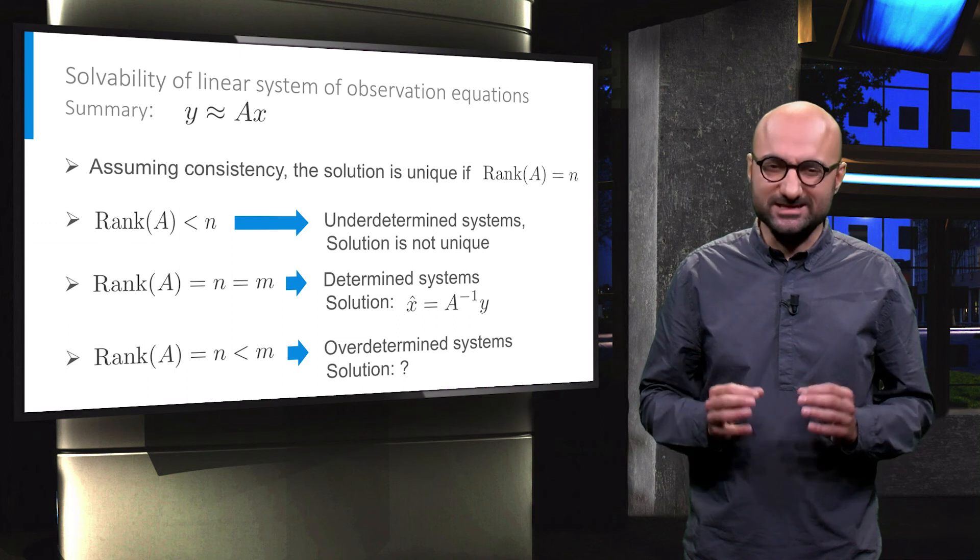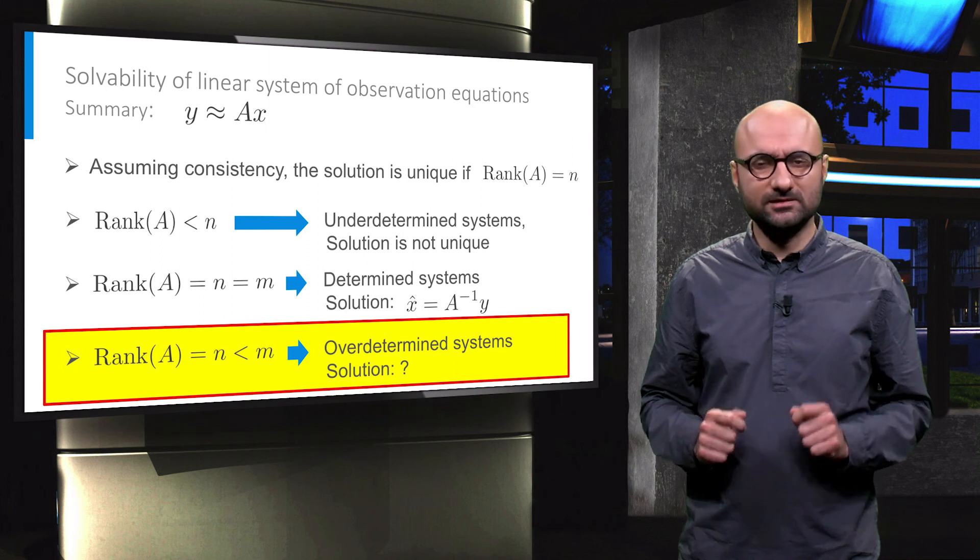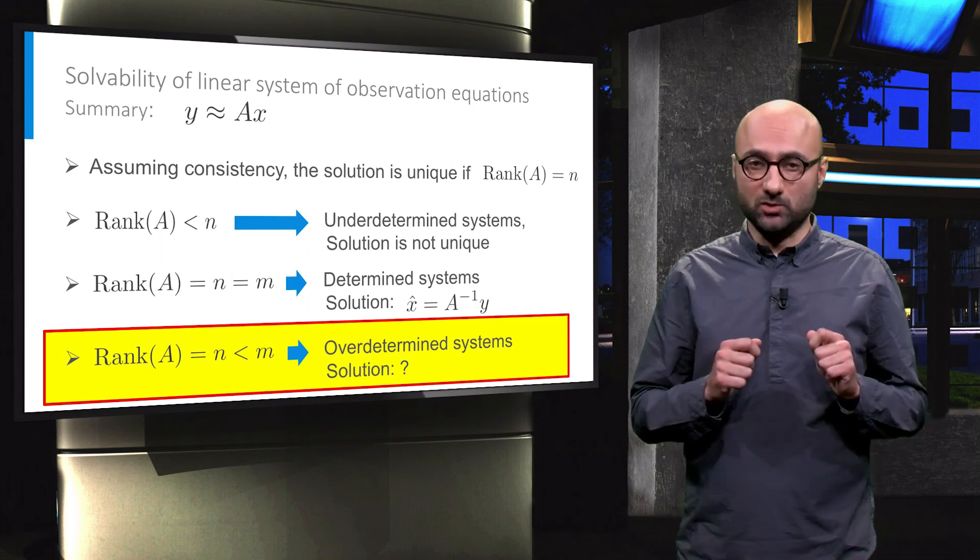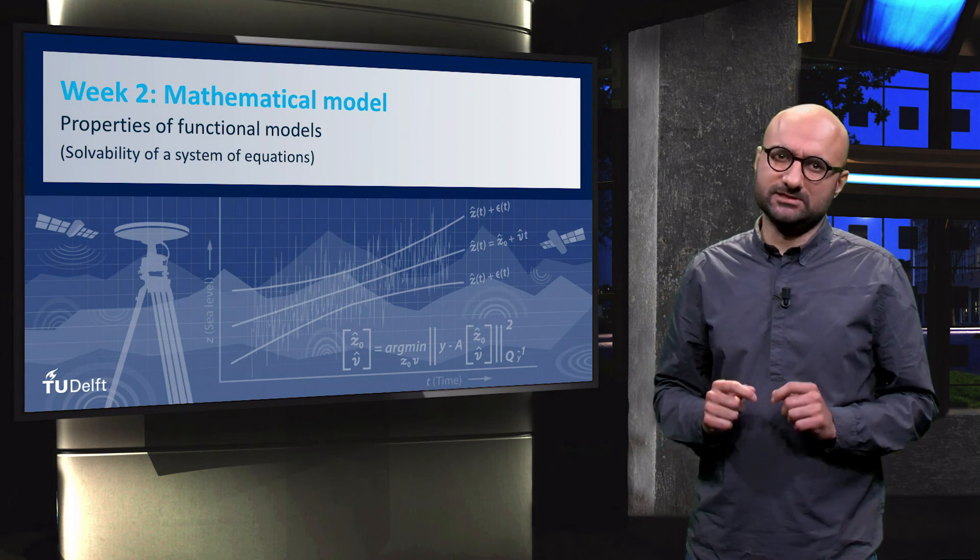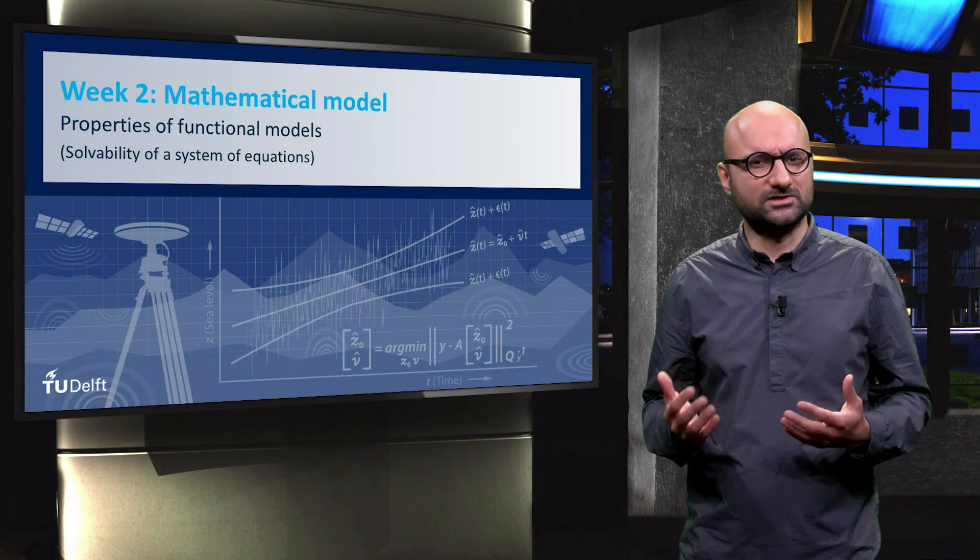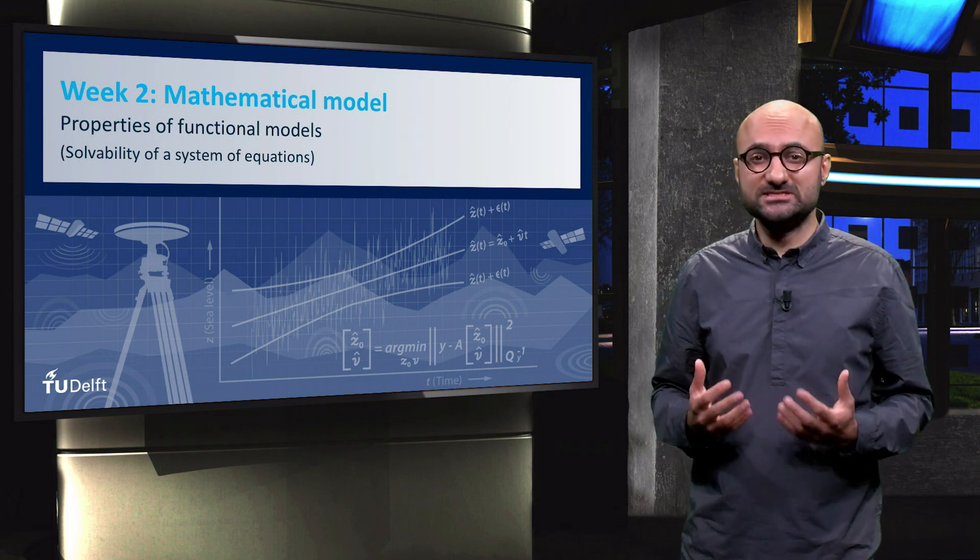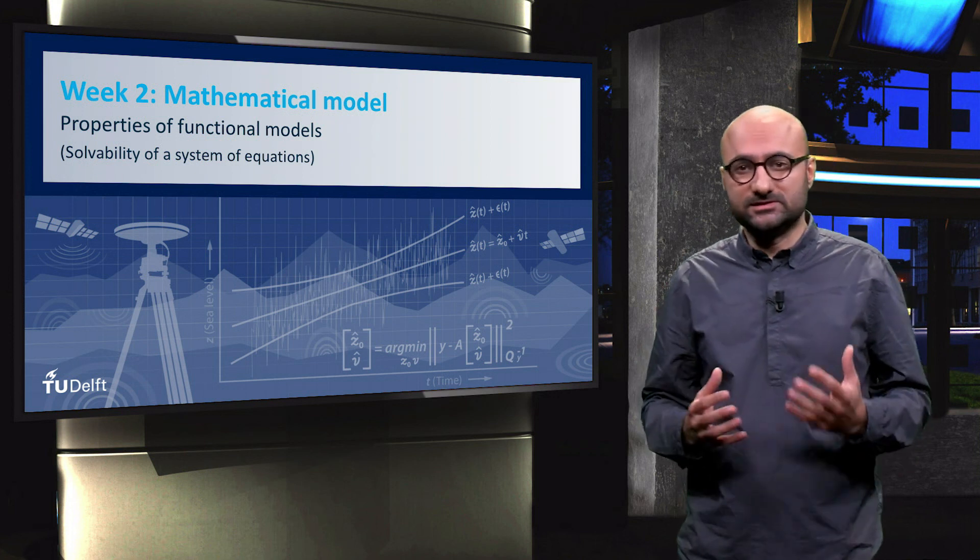In the rest of this course we mainly focus on how to handle the inconsistent and over-determined systems. It is now a good time in the next unit to look at some examples of these different kinds of functional models and get a better sense of the concepts of redundancy and over or under-determined systems.